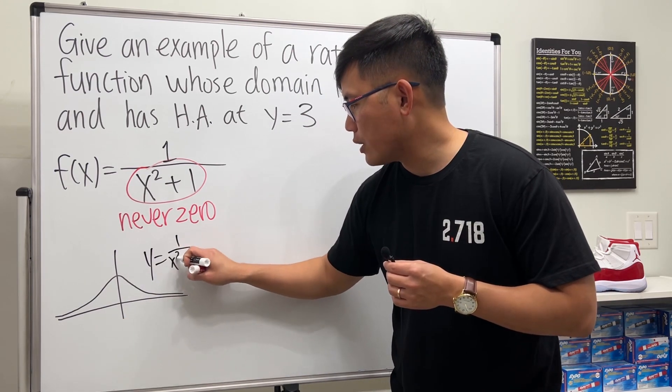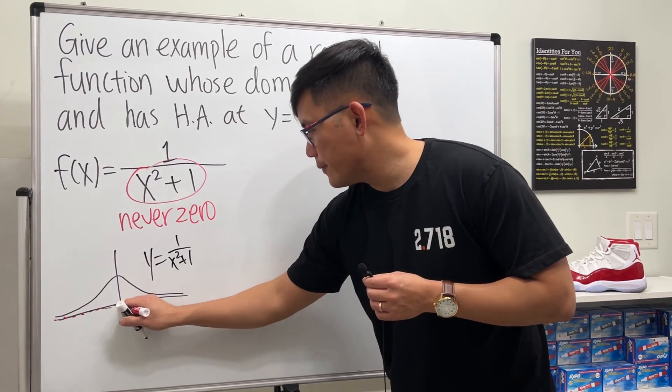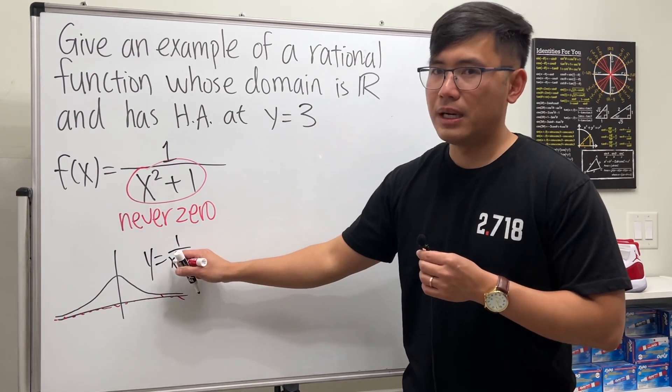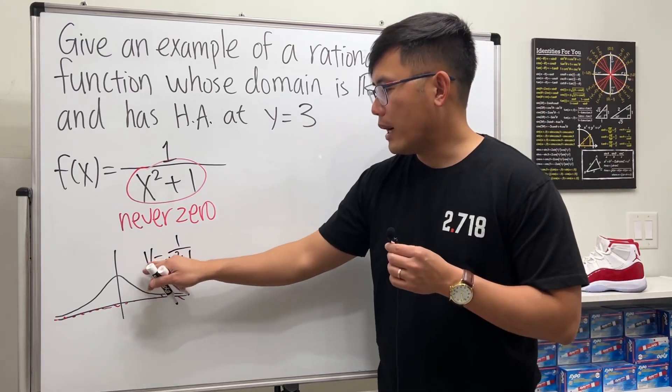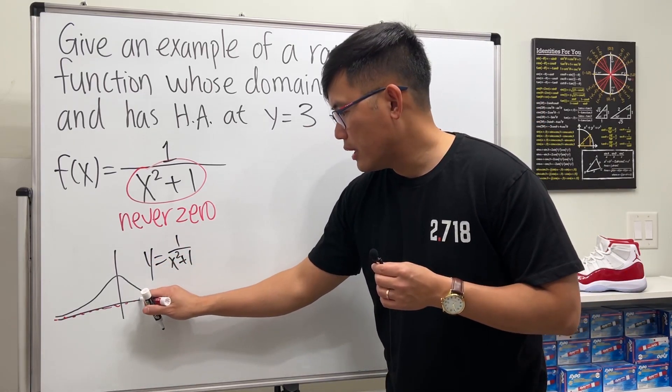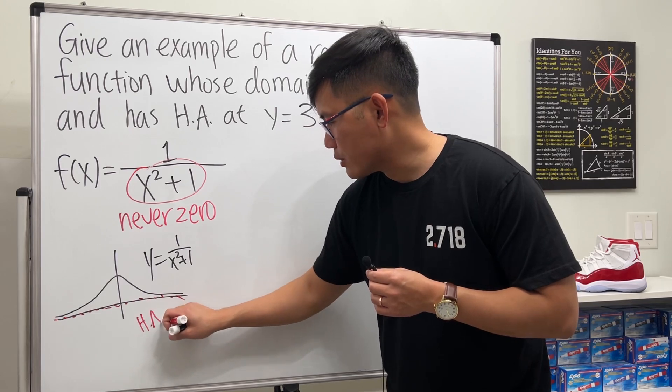It will look something like this. This is y equals 1 over x squared plus 1, and notice because we have the x on the bottom, as x goes to infinity, y will be approaching zero.